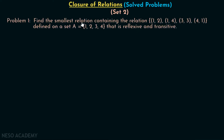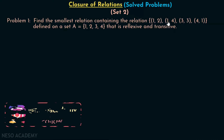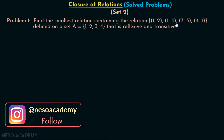Here is Problem 1. Find the smallest relation containing relation R, which is defined on set A consisting of all these elements. We are interested in finding the smallest relation that is both reflexive and transitive. In other words, we find the reflexive closure and the transitive closure of R, then take their union. This will give us the smallest relation containing R which is both reflexive and transitive.